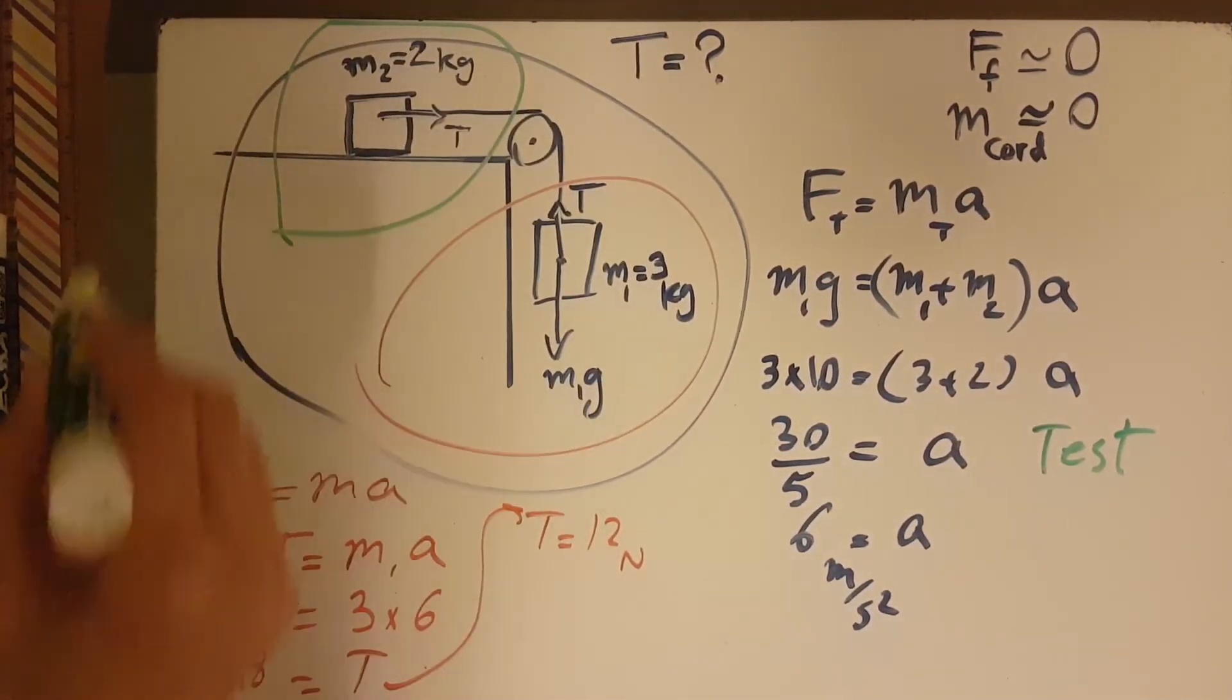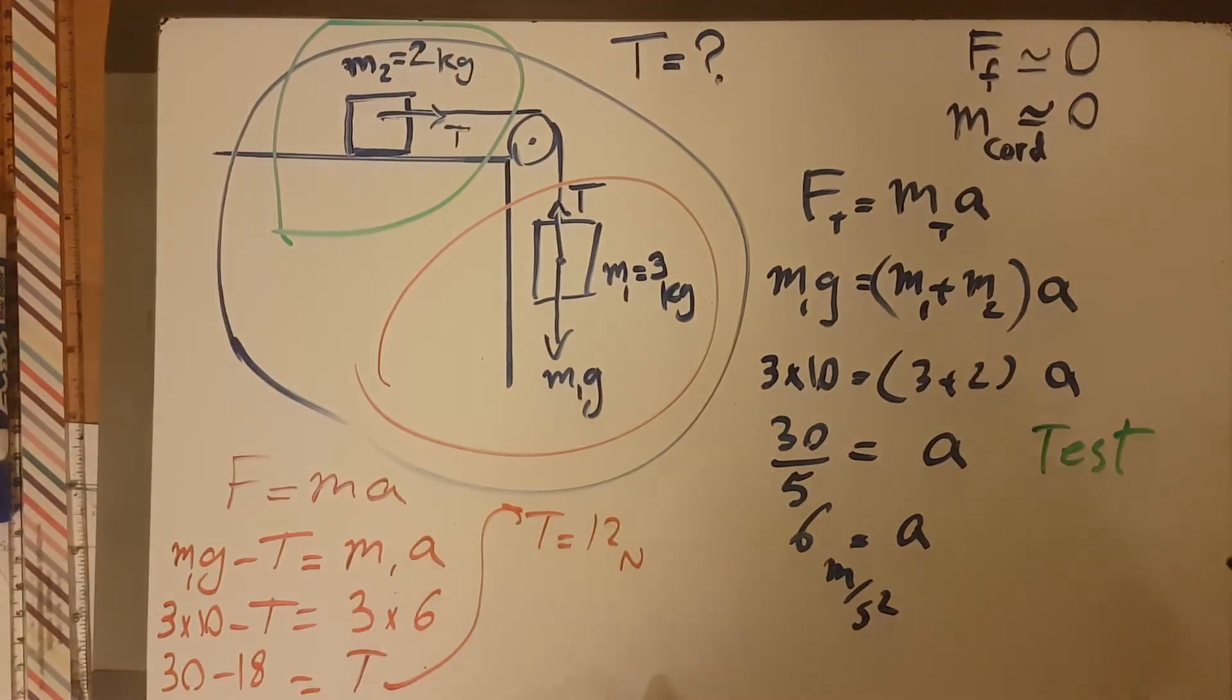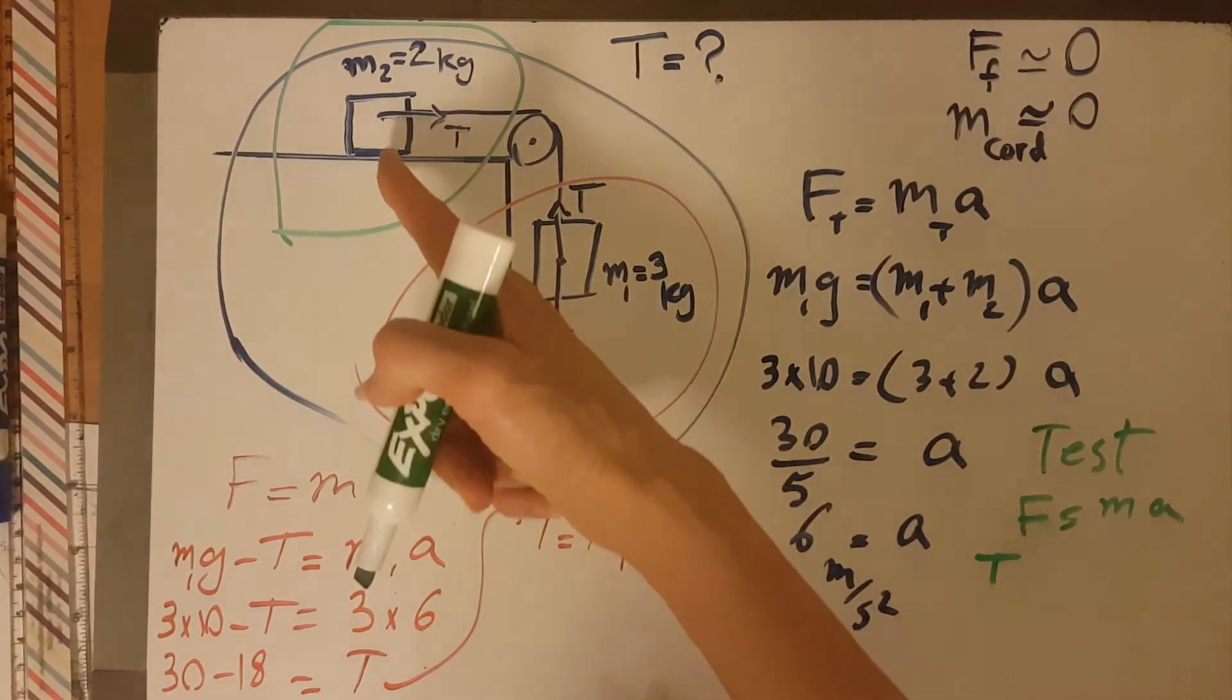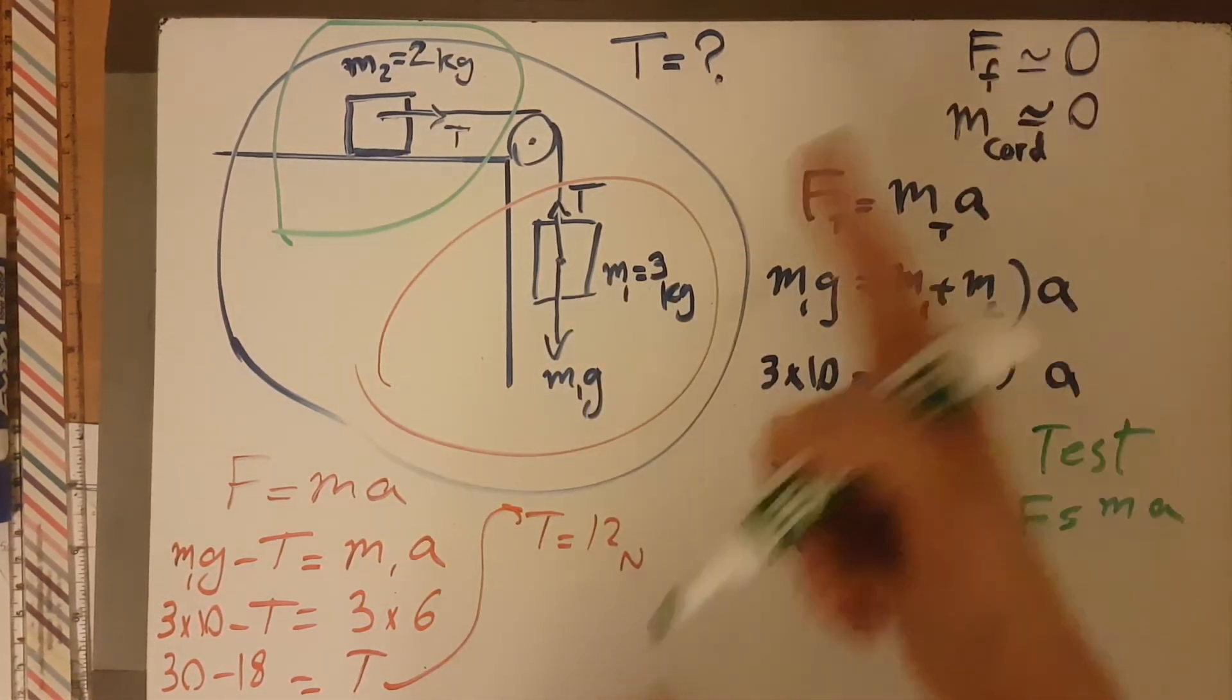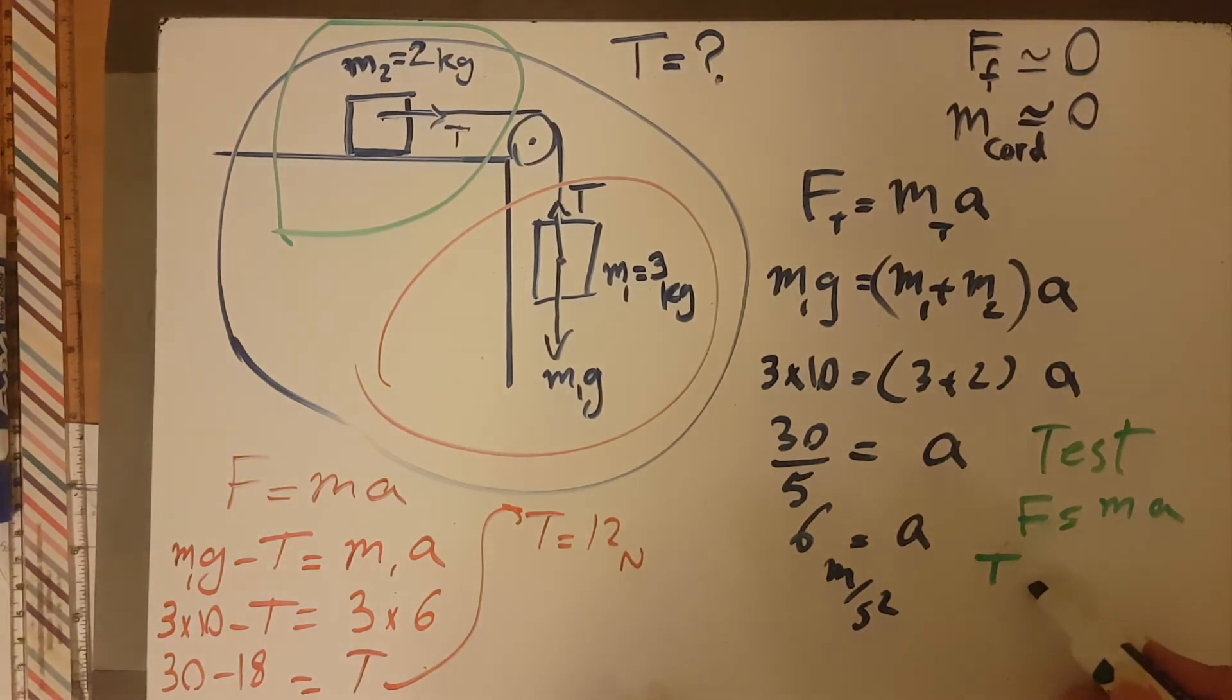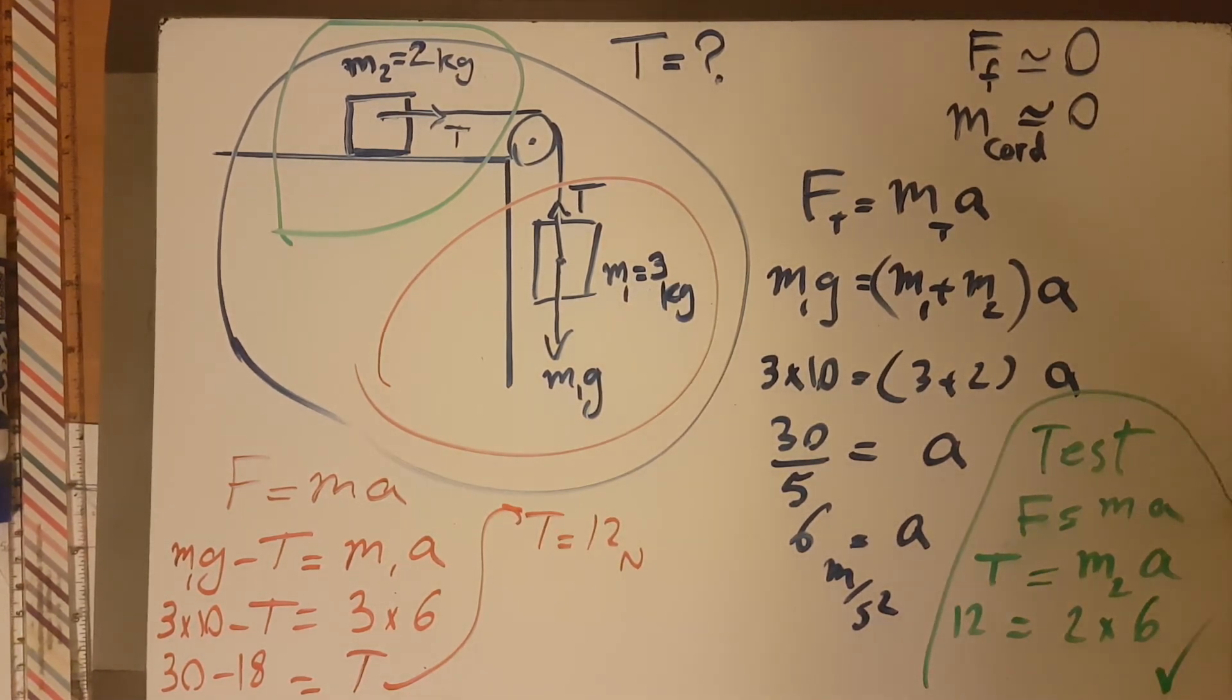In here I draw a circle. I know that T's are supposed to be equal. In this circle, F equals MA, and in this circle the T is the only thing which is affecting this because the friction is 0. So T equals M2A. The T I found is 12, M is 2, and A is 6. Check! I tested it and it was correct.